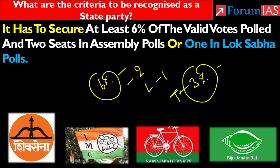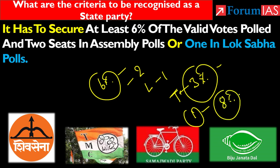Second condition: Lok Sabha election mein every 25 seats mein se at least one seat unhe win karna hota hai. Third condition: Lok Sabha ya state general election mein party ko at least 8% of total poll achieve karna hota hai — means 8% vote agar unhe mil jata hai general election mein, tab bhi unhe state party ke taur par recognize kiya ja sakta hai.